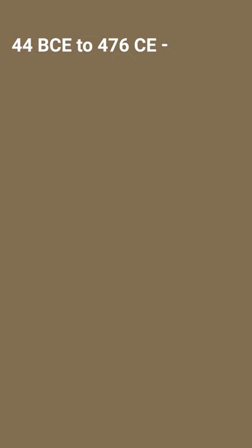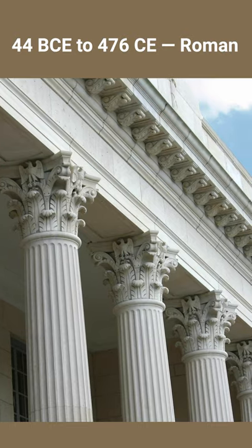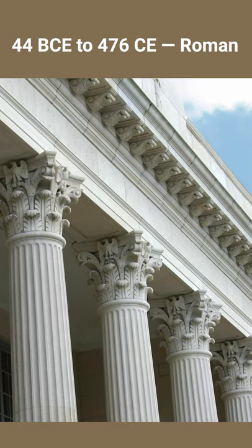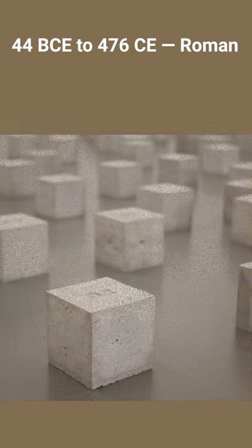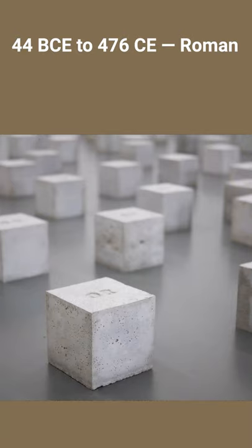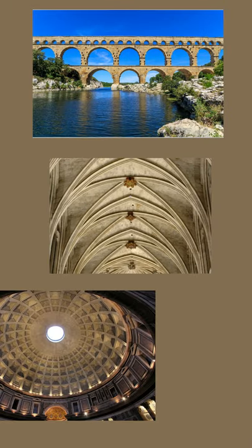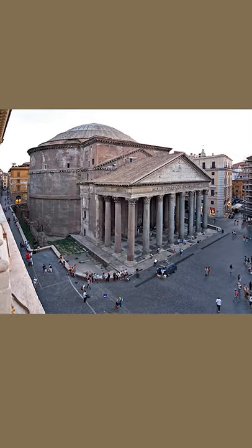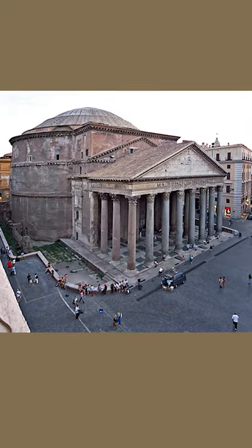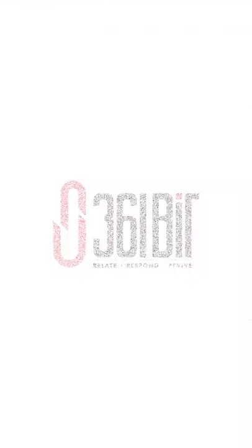The Roman Period: the Romans used Corinthian and composite style of columns, and the invention of concrete allowed the Romans to build arches, vaults, and domes. An example is the Pantheon in Rome.